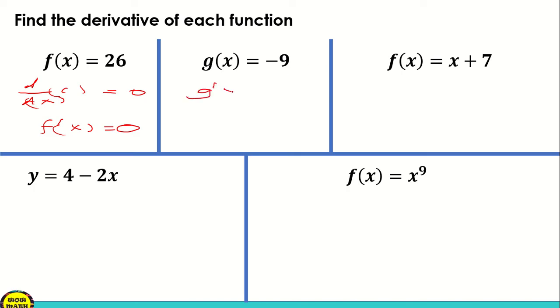So dito tayo sa pangatlo, we have the sum, pwede natin i-apply dito yung sum rule, paano kunin yung difference, kunin na yung derivatives ng x plus 7. So again, the given is f(x) is equal to x plus 7. So para makuha natin yung derivative niya,